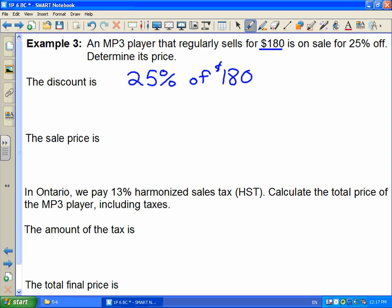We take our percent and turn it into a decimal. 0.25 of means times 180. We punch this into our calculator and find that 25% of $180 is $45. This is how much the MP3 player is discounted, or how much is taken off the price.